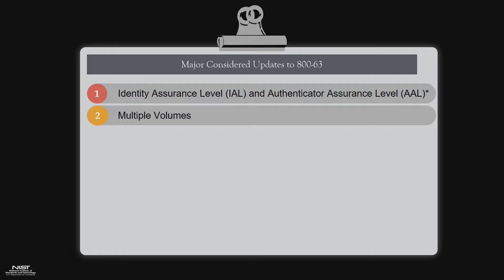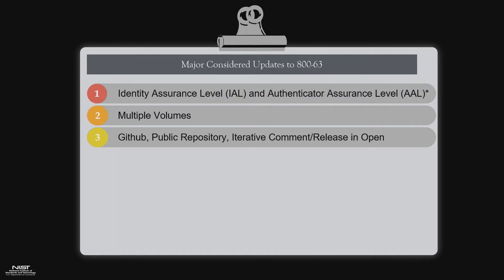Multiple volumes — this is a usability thing. Now that we've broken things up, agencies that care about proofing can only go to the proofing chapter. We're taking a new approach. Usually we take our documents and go in the office for a year, write them, put them out for 30 days, collect comments, go back for another six months, then release the final. For a document like 63 which has private sector impact, we decided we want to do this in public. We're actually going to do this on GitHub.